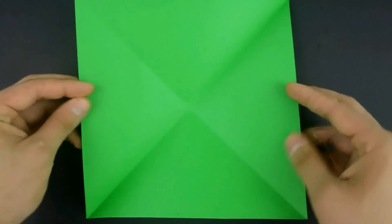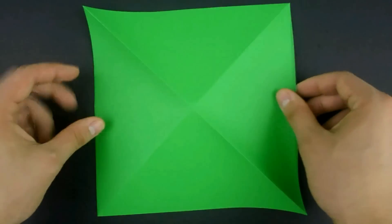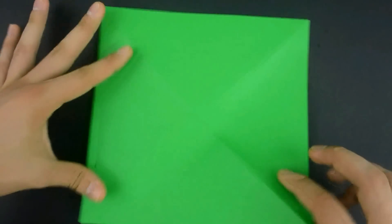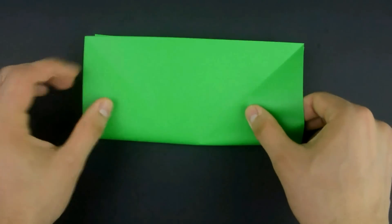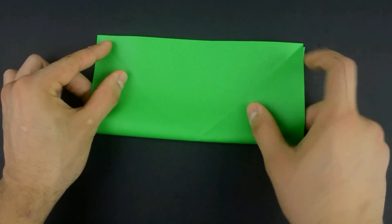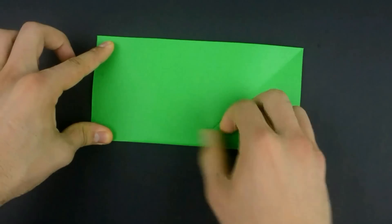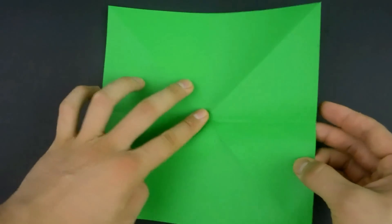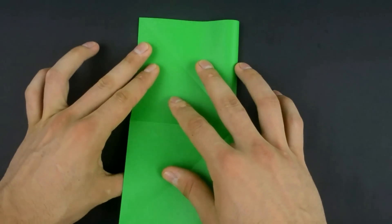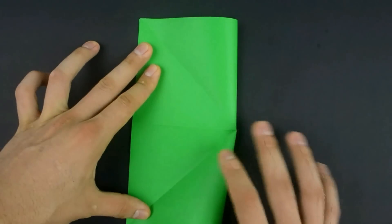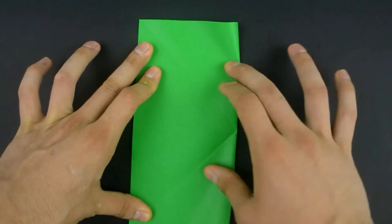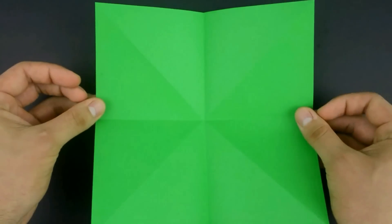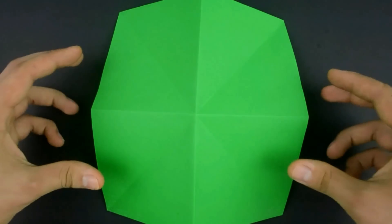Turn it over. Now fold in half horizontally and vertically. Turn it over again and close, pushing the corners to the center.